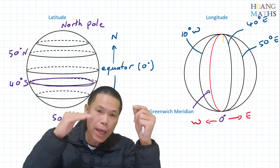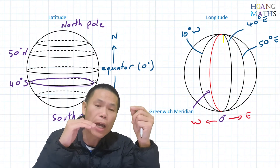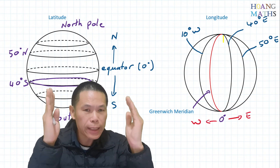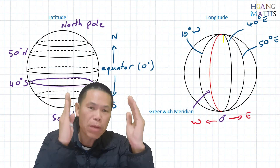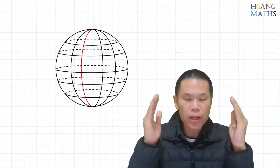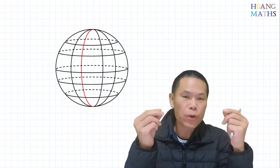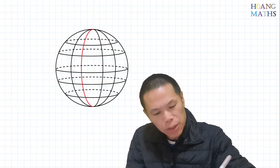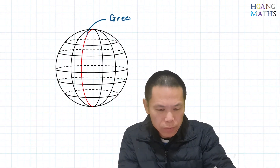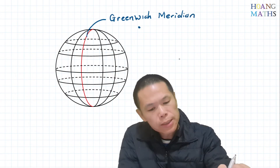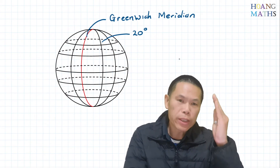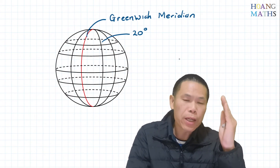So the surface of the earth consists of latitude and longitude. Latitude tells how far the angular distance is away from the equator — either north or south. Longitude tells the angular distance away from the Greenwich meridian. Now let's look at a diagram of the surface of the earth. The red line is the Greenwich meridian, so let me just write that down — Greenwich.